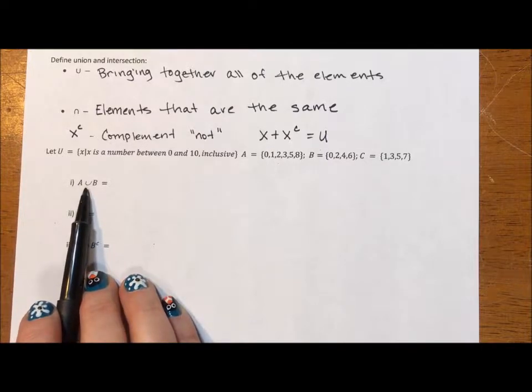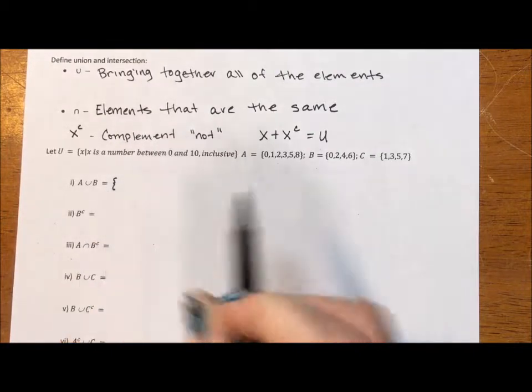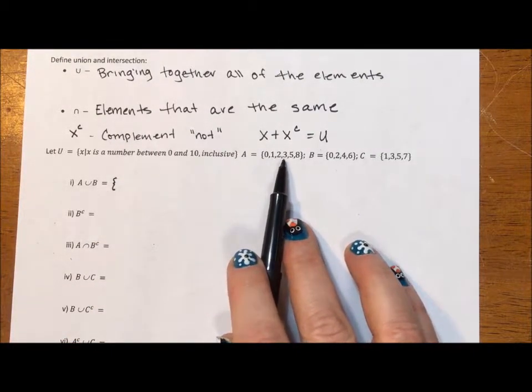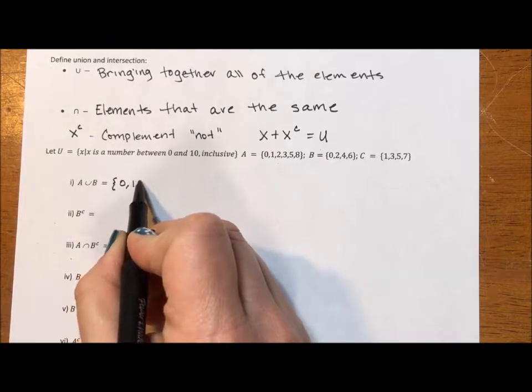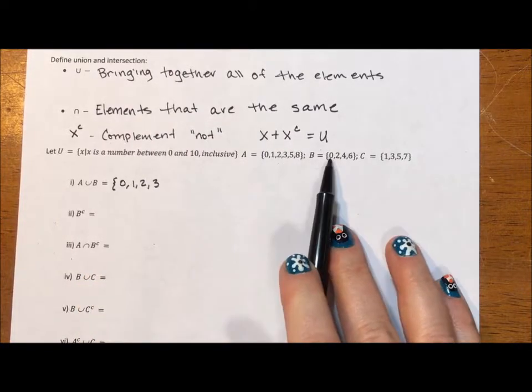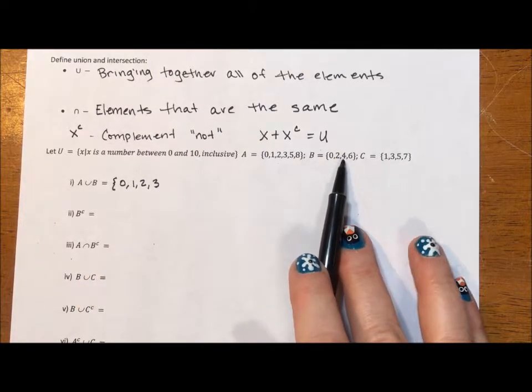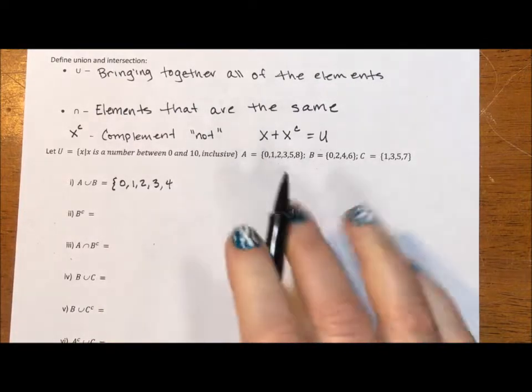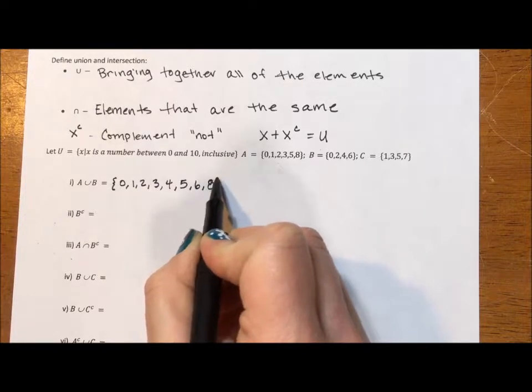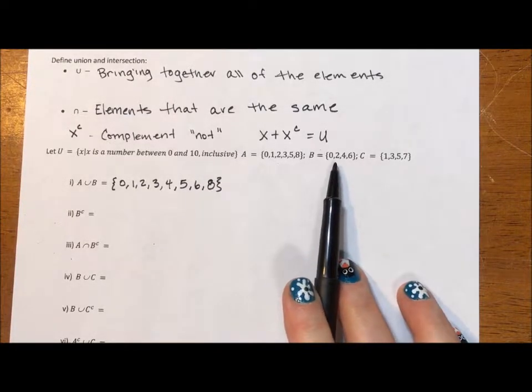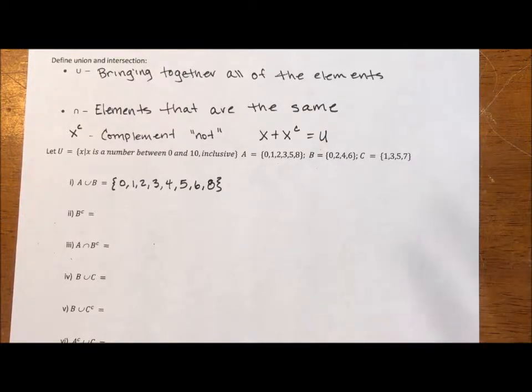This is a union. Union says bring all of the elements together. So I only list elements once. So A has 0, 1, 2, 3. And 0, 1, 2, 3 is the beginning of this. So I'm just going to list off 0, 1, 2, 3. Then 4. B has 4. A has 5. B has 6. And A has 8. Notice I didn't list the 2 twice. I didn't do that because you don't need to list elements twice. Actually, you should not. You should only list every element once.